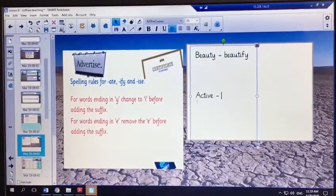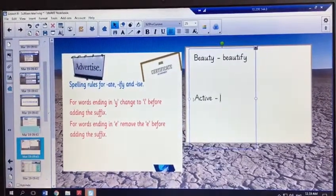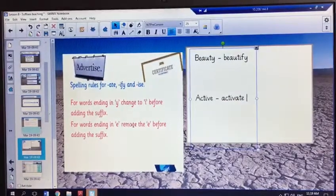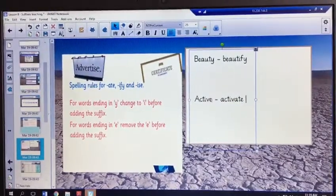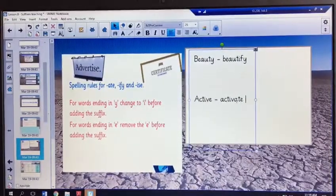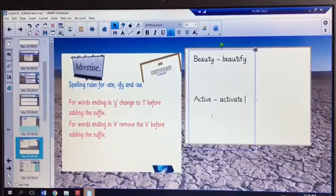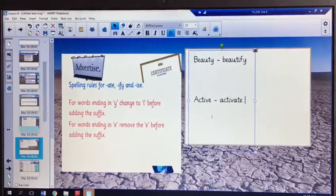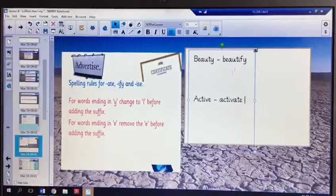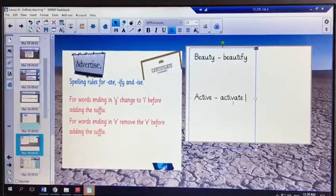And in this example, active, I'm going to add the suffix -ate. Activate. You will have noticed again that I have removed the e, so I've removed the e before adding the suffix -ate. And we have changed the two nouns into verbs. So to beautify something is to make something more beautiful, and to activate something is to start something.